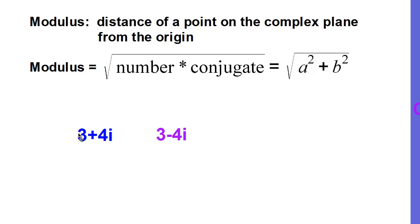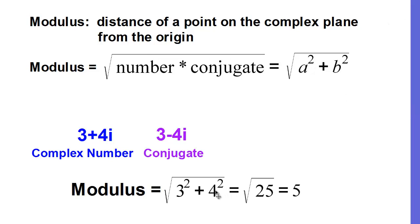Looking at 3 plus 4i and its conjugate 3 minus 4i: the modulus — the distance that number is from the origin on the complex plane — is the square root of 3 squared plus 4 squared, which is the square root of 25, or 5. So the modulus of 3 plus 4i equals 5. The modulus of 3 minus 4i is also 5, because we are squaring those numbers, and regardless of whether they're positive or negative, the distance remains the same.